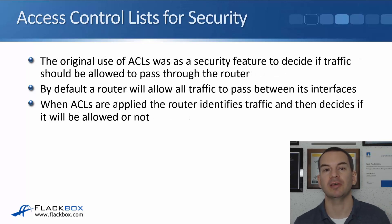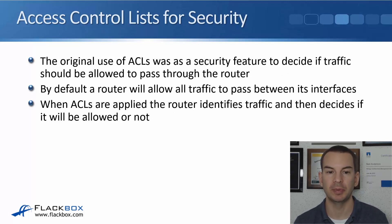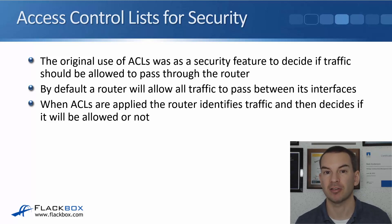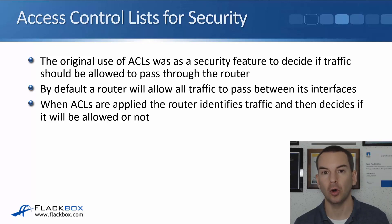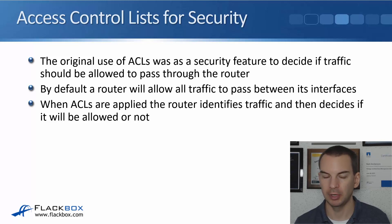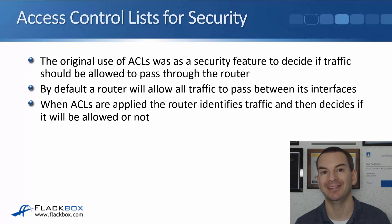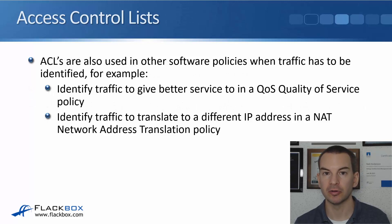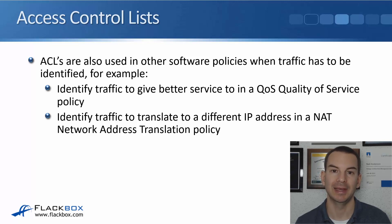The original use of ACLs was as a security feature which helped decide if traffic should be allowed to pass through the router or not, and that's still normally the first thing people think about. By default, a router will allow all traffic to pass between its interfaces and ACLs are not applied, but when ACLs are applied the router identifies traffic and then decides if it will be allowed or not.